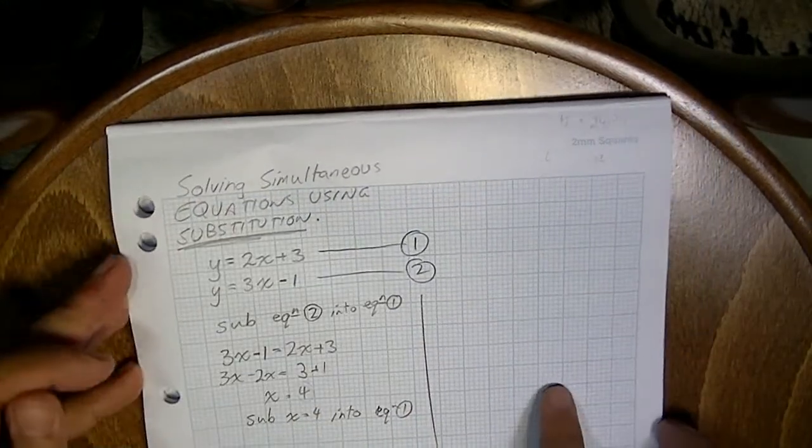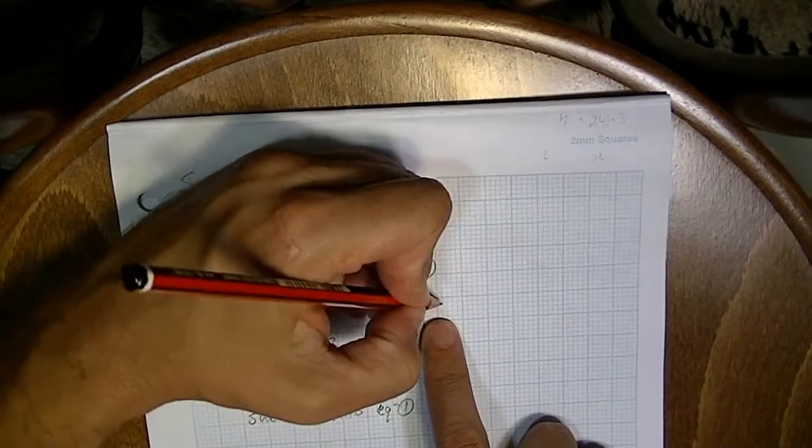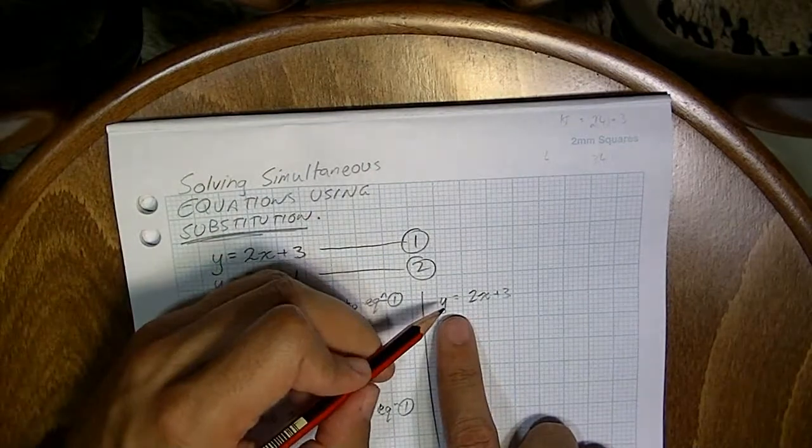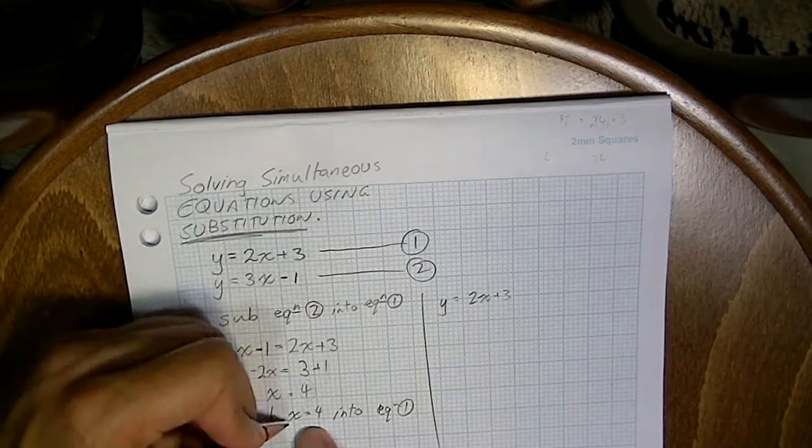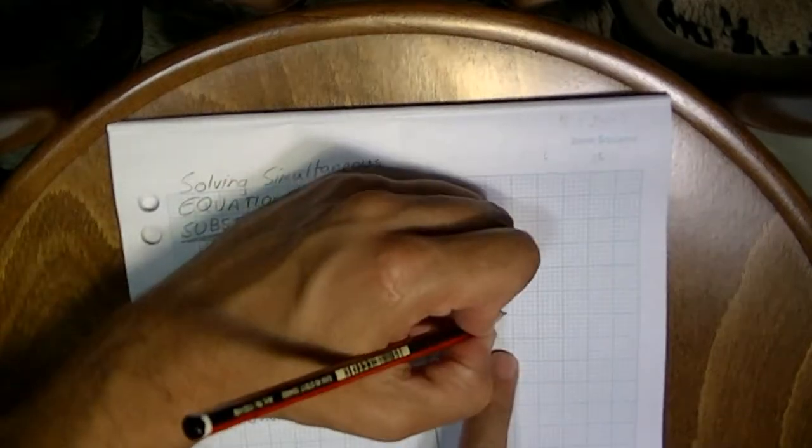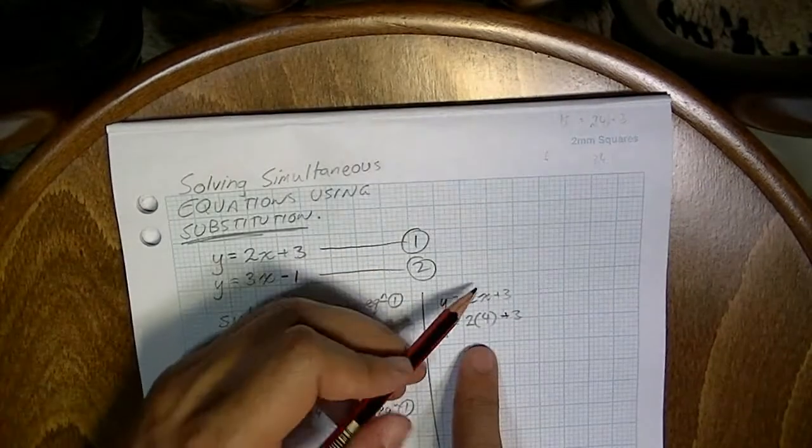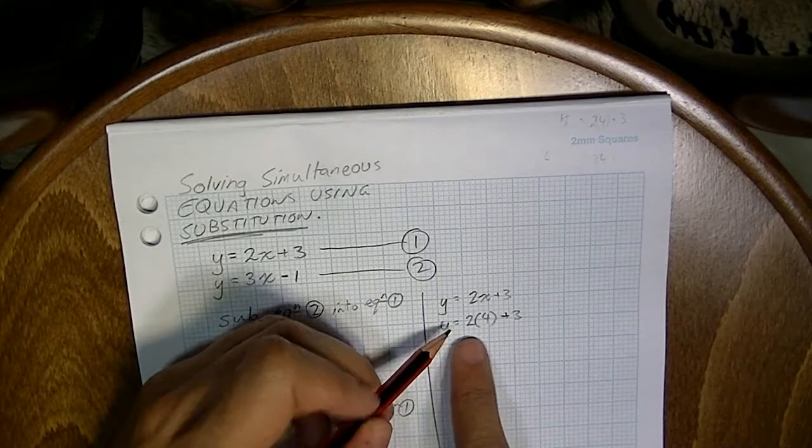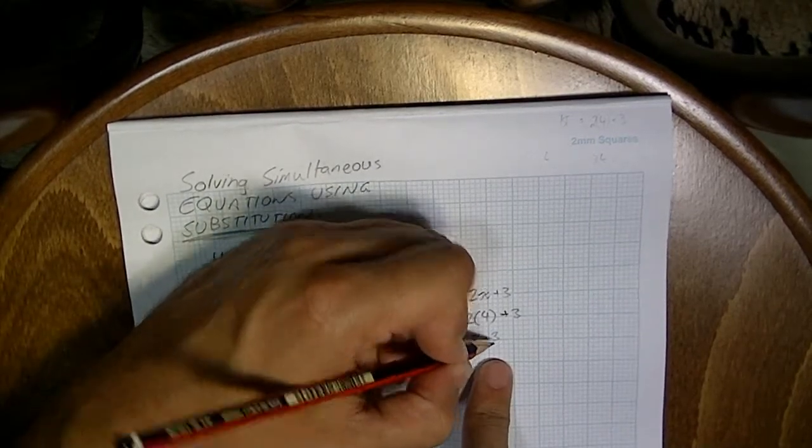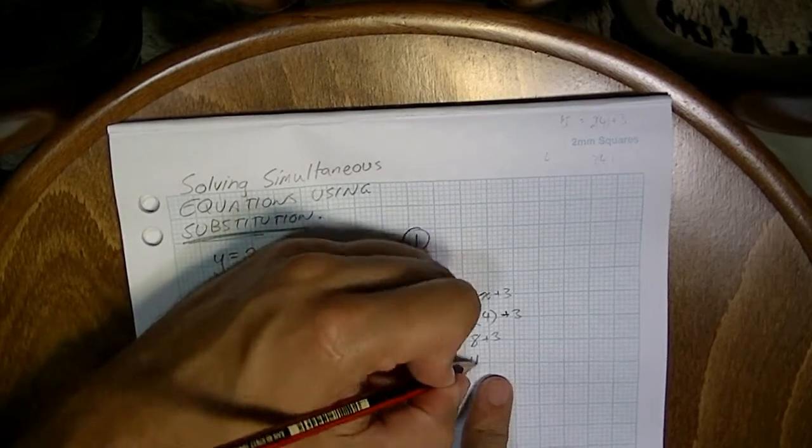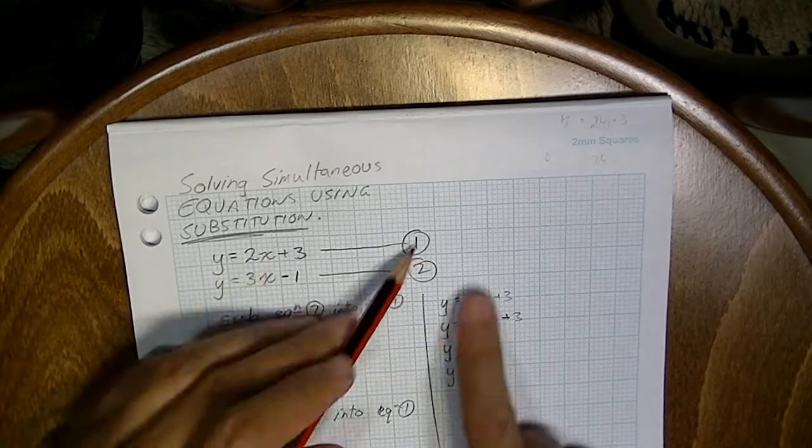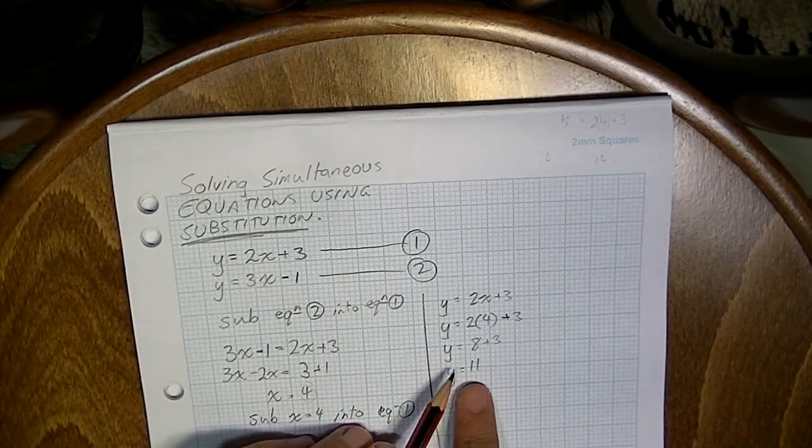Sub x equals 4 into equation 1. I'll do some work here. So y equals 2x plus 3. That was equation 1. So I'm going to sub x equals 4 into that. Careful. Make sure you put some brackets in here. That's probably the easiest way to not stuff up. Y equals 2 times 4, which is 8 plus 3. Y equals 11. Now, that means that when x equals 4 in equation 1, y is equal to 11.